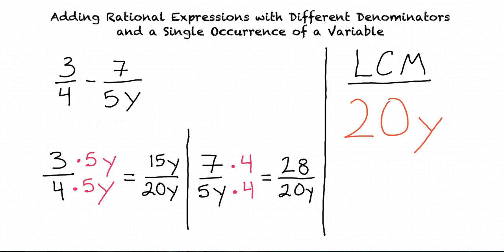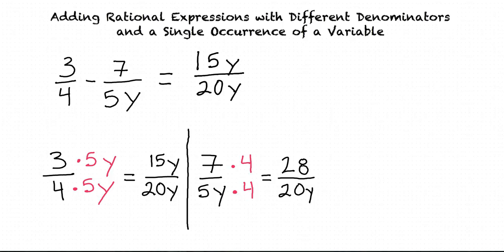Great. Now we can rewrite our expression using these equivalent fractions that have a common denominator. Instead of 3 over 4, we'll write 15y over 20y. And instead of 7 over 5y, we'll write 28 over 20y.